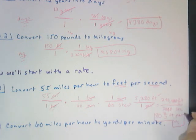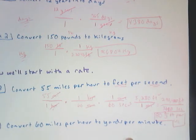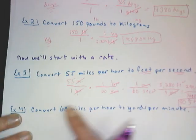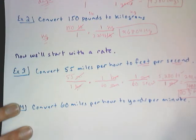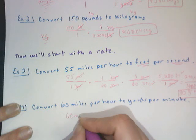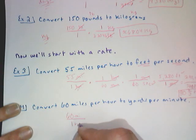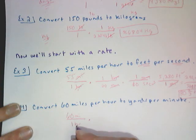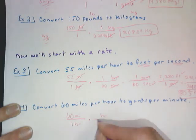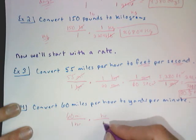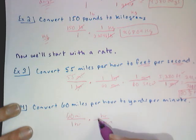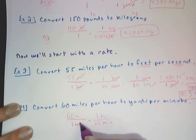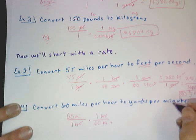So we started with the rate, and we ended up with the rate. Now for the second one, convert 60 miles per hour to yards per minute. So I start with the rate, 60 miles over 1 hour, and I need to go to yards per minute. So I'm going to address the time again. So hours is on the top to get it to cancel. So in 1 hour, there are 60 minutes. So this I've taken care of.